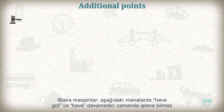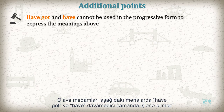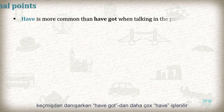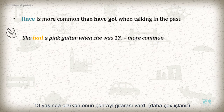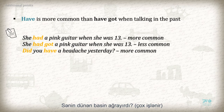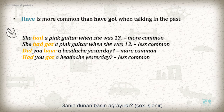Additional points. Have got and have cannot be used in the progressive form to express the meanings above. I have got / I have a headache — correct. I am having a headache — incorrect. Have is more common than have got when talking in the past. She had a pink guitar when she was 13 (more common). She had got a pink guitar when she was 13 (less common). Did you have a headache yesterday? (more common). Had you got a headache yesterday? (less common).